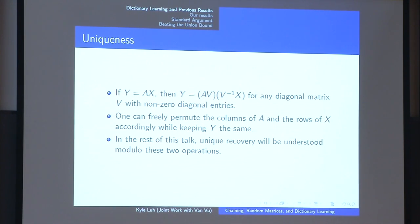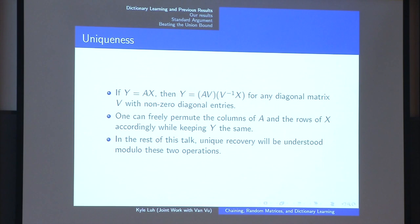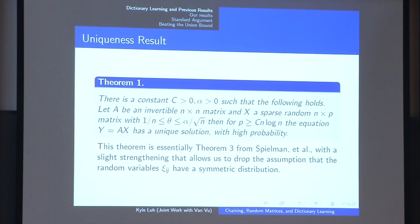Let's spend a few moments discussing what uniqueness means in this problem. Given Y, if I reconstruct it as A and X, notice that if I multiply on the right of A by a diagonal matrix with all non-zero diagonals and multiply by the inverse on the left of X, the product is unchanged. Also if I permute the columns of A and apply that same permutation to the rows of X, the product is also invariant. So the best you can hope to do is recover A and X modulo scaling and permutation. For the rest of the talk, when I mention unique, I mean up to these two operations.